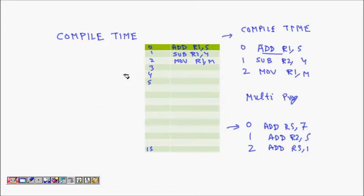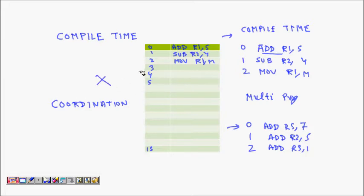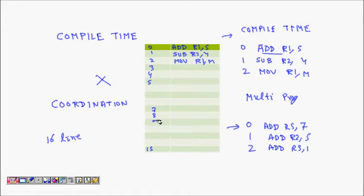Multi-programming cannot be easily supported with compile-time binding because coordination is needed among all programs — if one program has taken a memory region, others cannot use it, and this coordination must happen at compile time itself. This concept does not scale well. If there is only one program, it works fine. But with many programmers, memory location collisions are very likely.